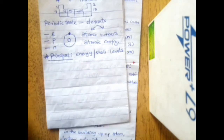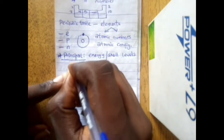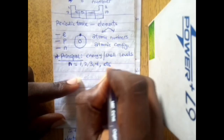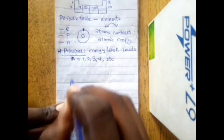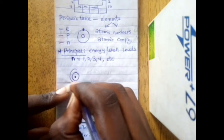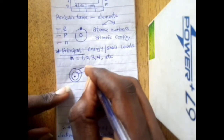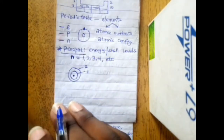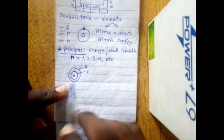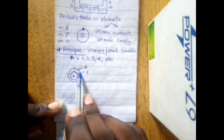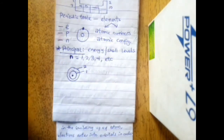The principal quantum number is designated as n, and n can range from one, two, three, four and so on — these are the energy levels or shells. Shell number one is n=1, shell number two is n=2, and so on. This tells us the number of shells an atom has. The shells are also designated by letters: K, L, M, N.